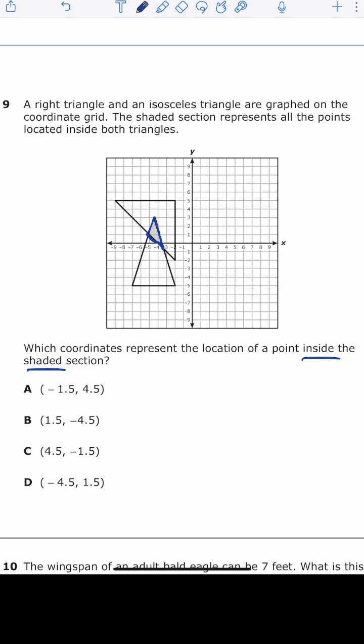Letter A is negative 1.5 and 4.5, which means we're going to go left 1.5 and up to 4.5. And as you can see, that is not inside the shaded area.